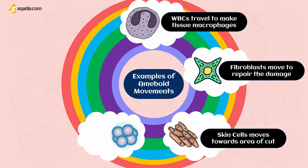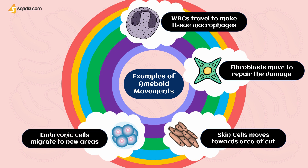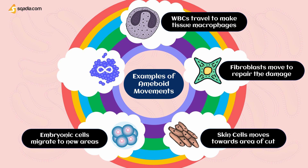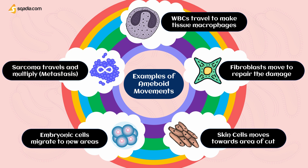Other cells that show amoeboid movement are the cells of the embryo and fetus. During development of the embryo, embryonic cells migrate from their site of origin to new areas. Even cancerous cells — for example, sarcoma, which arises from connective tissue abnormality — follow amoeboid movements.